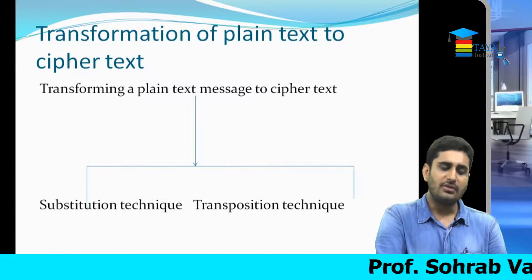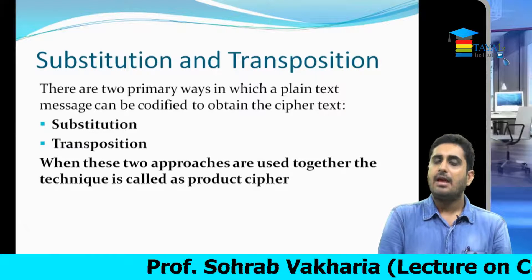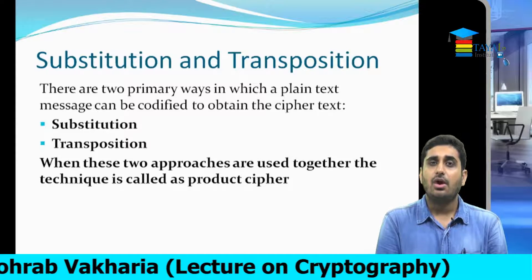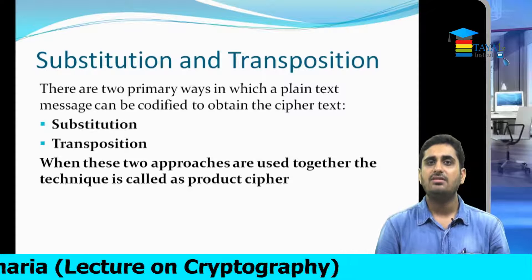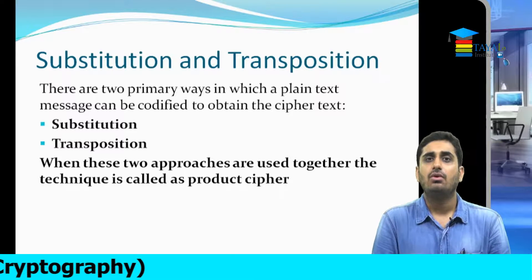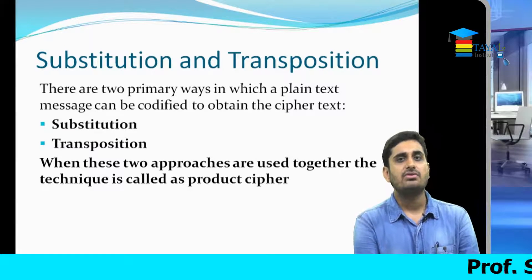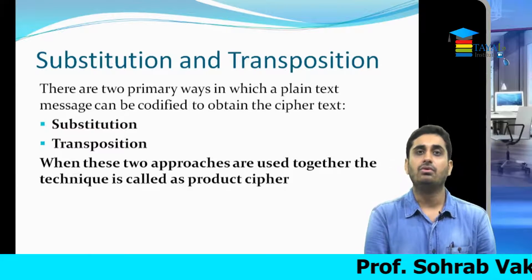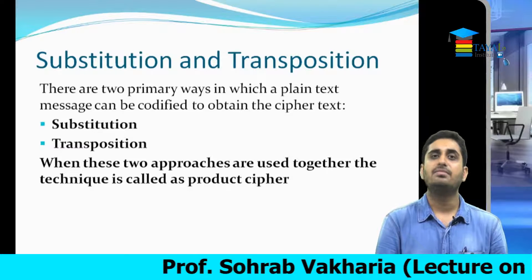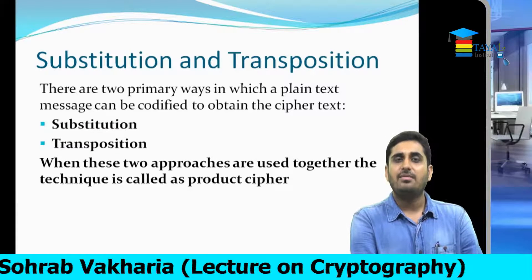Another technique is the transposition technique. In this technique you don't substitute or change one character with another; instead you simply jumble the positions. For example, 'my name is Saurab' — S, O, H, R, A, B — I would transpose all characters. The first character might become O, the second S, the third B, and so on. The characters remain the same; only the positions have changed.